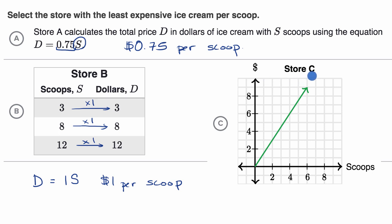Store C, all right. So here this relationship is described with a graph, but we can put it in the same forms that we saw before. So for store C, let me make a little table here. And so if I have the scoops and I have the dollars, so let's see. When I get 2 scoops, it looks like, and I'm just picking values where it looks like I can read the graph easily. Two scoops looks like $3. Four scoops, it is $6.